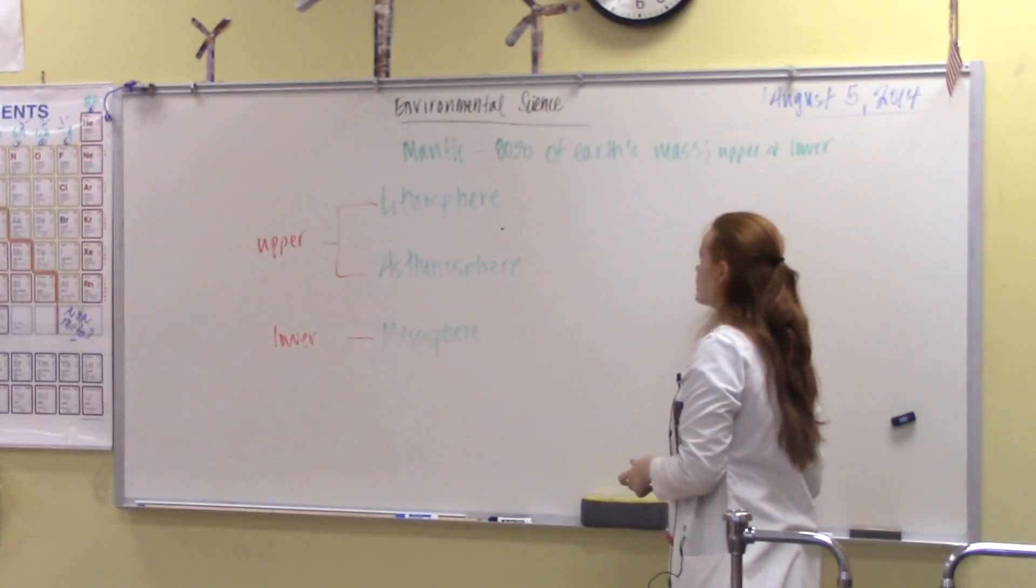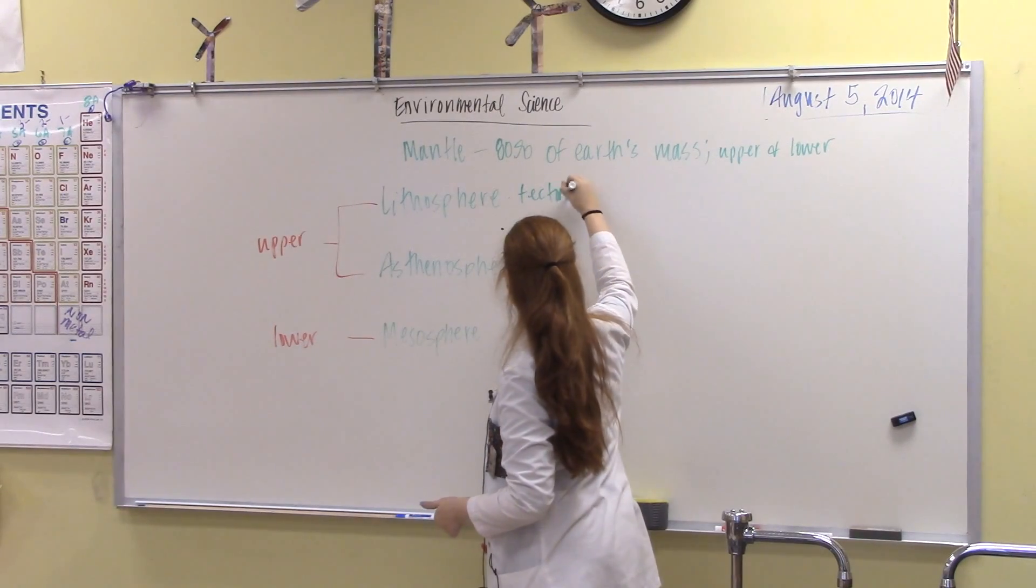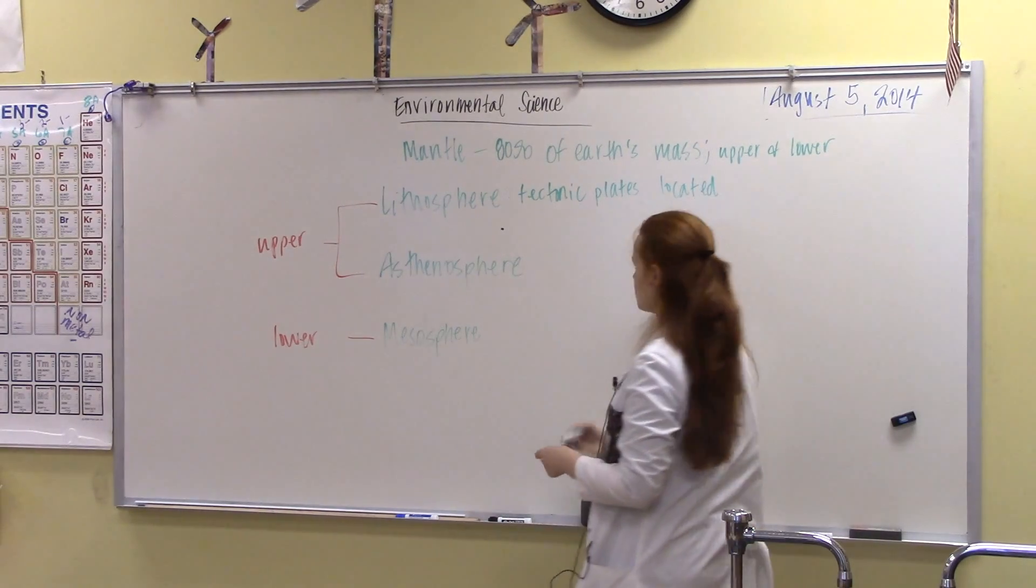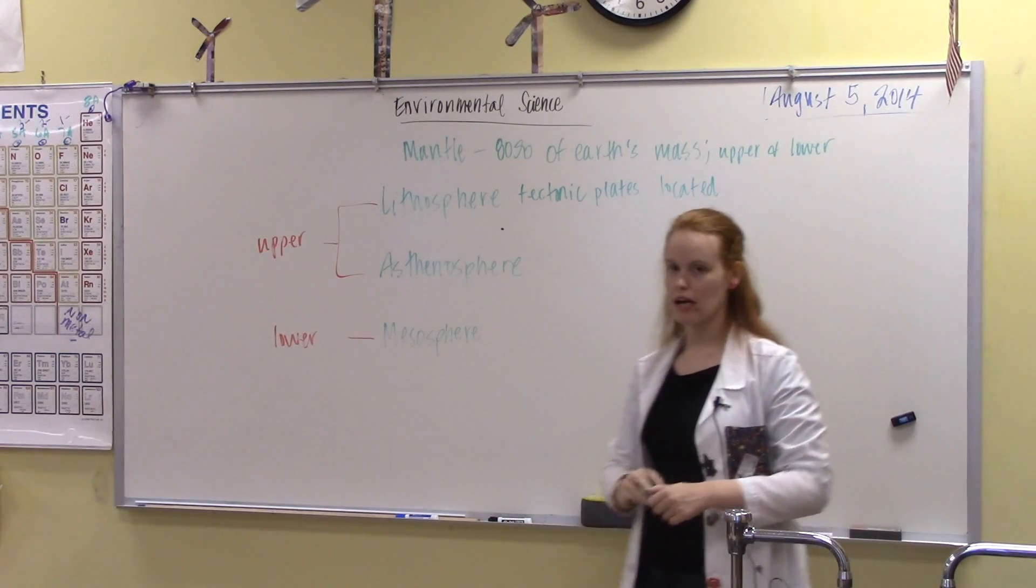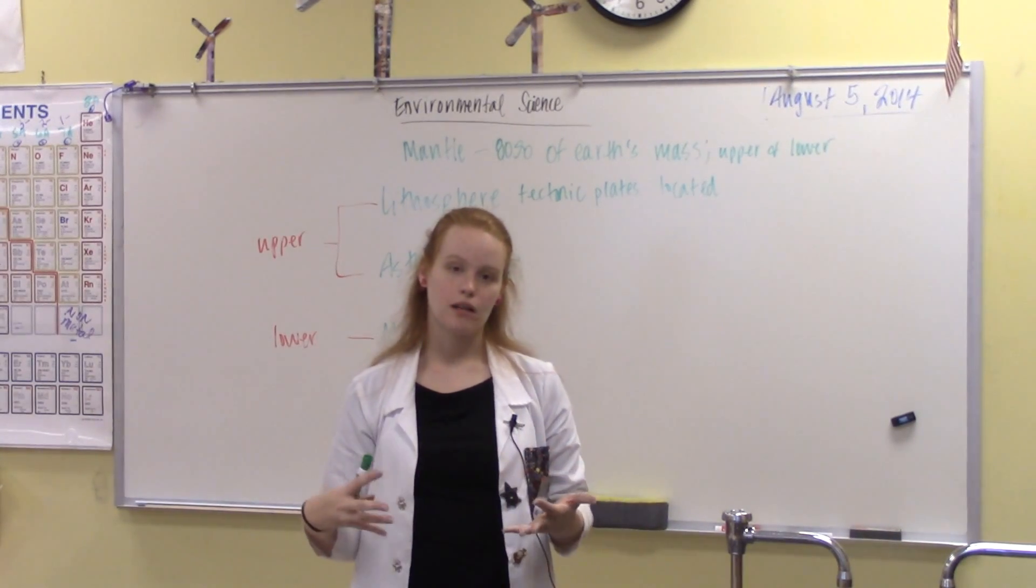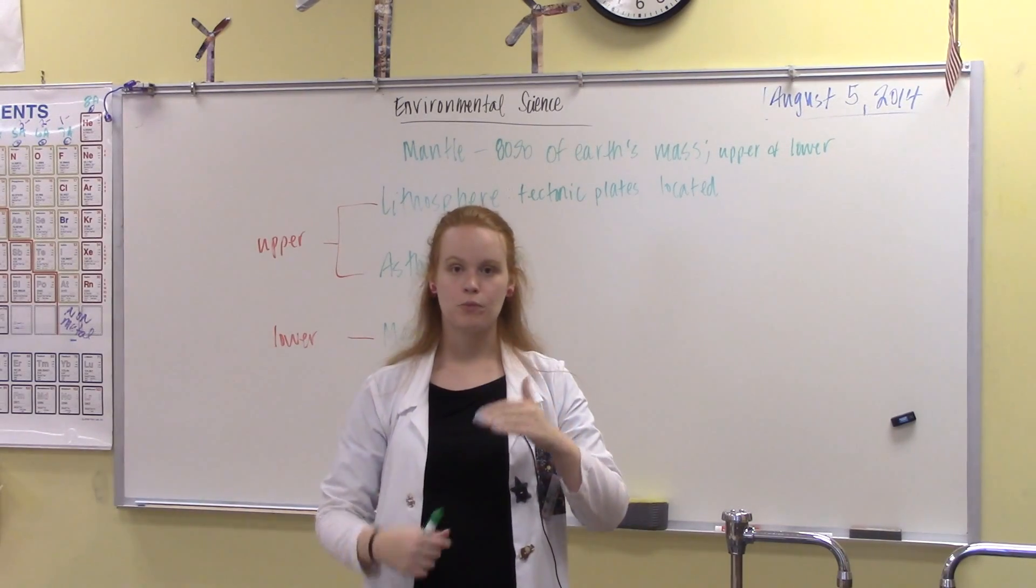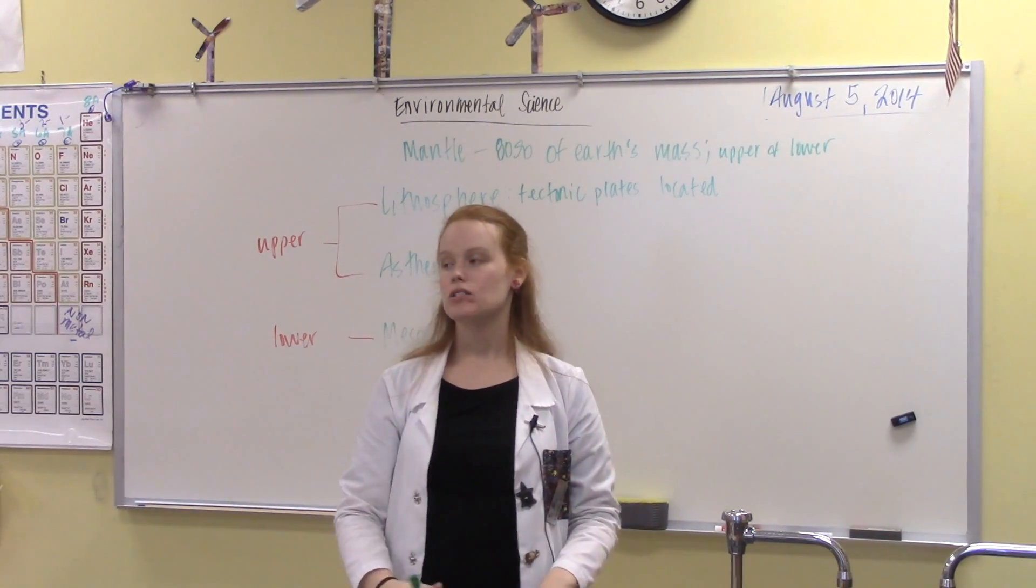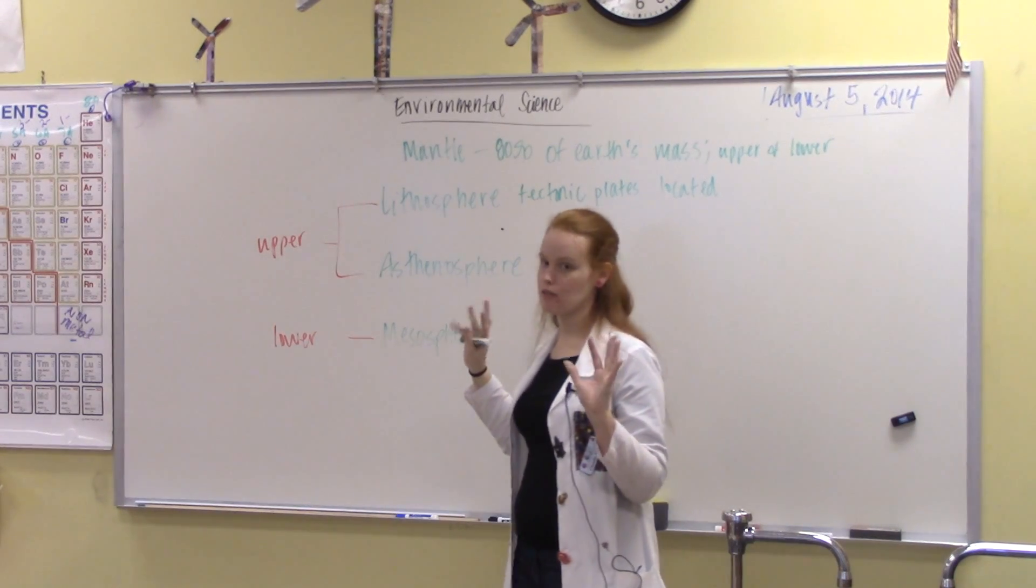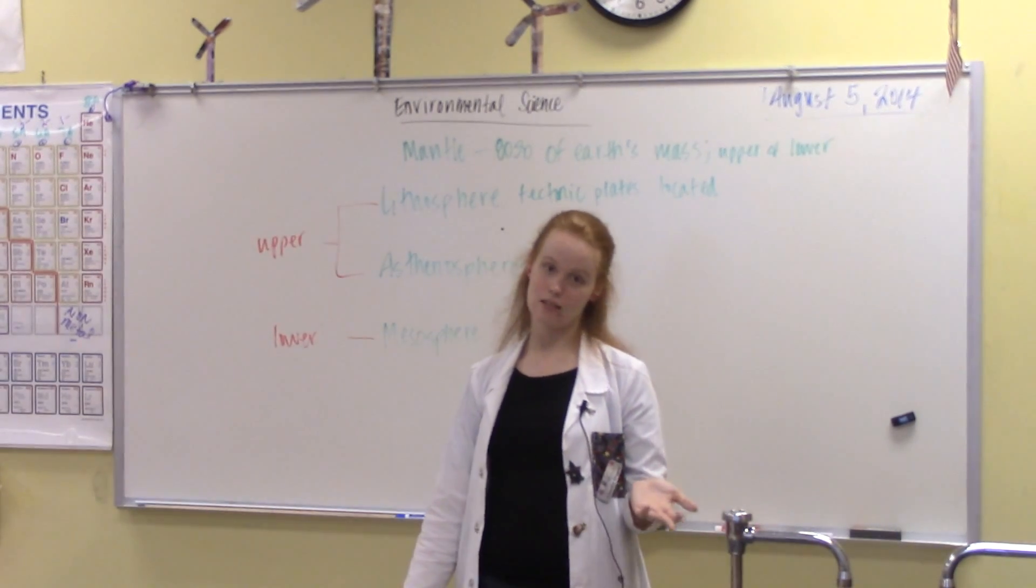Now, the lithosphere is where the tectonic plates are located. So, this is the tectonic plates home. Now, the one thing about the lithosphere that's important to remember is the lithosphere sometimes can be classified as both mantle and crust. Some geologists classify it as that. Some do not. I like to think of it this way. The lithosphere is the gray in between black and white. So, it is the middle part between the crust and the mantle. It has characteristics, a little bit of characteristics of both.